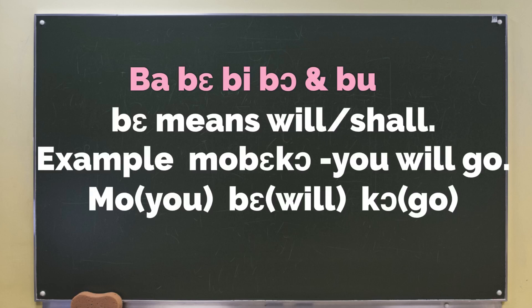Two: BE, and that means will or shall. For example, we can say MOBAKO — that means you will go. MO means you, BE means will, KO means go. So together, we say MOBAKO. It's interesting to know that in Chi, most often than not, the pronouns and the verbs are written together. For more explanation on this, check my other video on Chi pronouns.